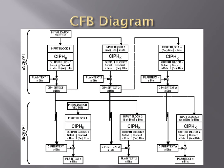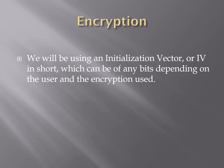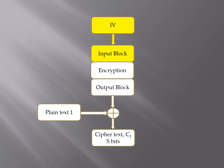Here's a diagram on the workings of CFB. We will now explain about encryption with CFB. We will be using an initialization vector, or IV in short, which can be of any bits depending on the user and the encryption used. S bits of the plaintext will be encrypted for each step. S bits is commonly 8 bits, but it is still user determined. We start with the first input block which will be the IV. The input block will then be encrypted, producing the output block.